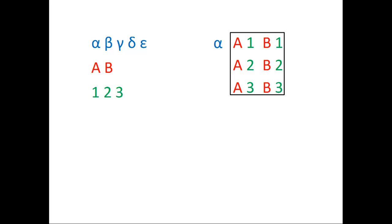Okay. We can do the same thing for beta now. So if we had chosen beta, then we could choose A, and then 1, 2, or 3, or B, and then 1, 2, or 3.